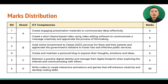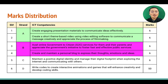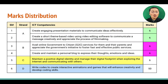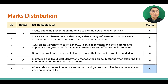Looking at the distribution of marks and content to be covered in the theory paper: Strand A has two competencies in the curriculum framework, Strand B has two competencies, Strand C has one competency, and Strand D has one competency. The marks distributed are 12 marks for Strand A, 12 marks for Strand B, 6 marks for Strand C, and 50 marks for Strand D. As you can see, Strand D — which focuses on coding — has the higher weightage compared to Strands A, B, and C.